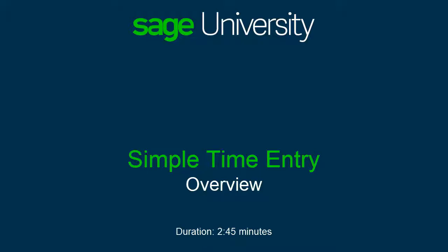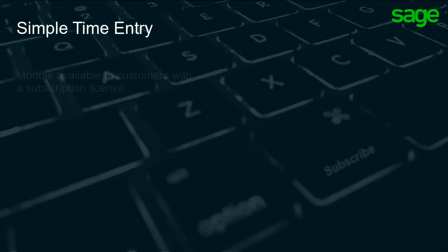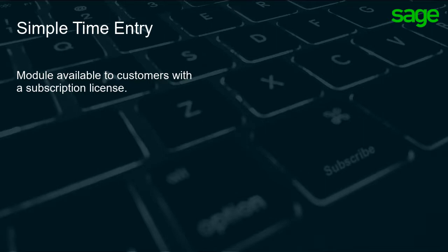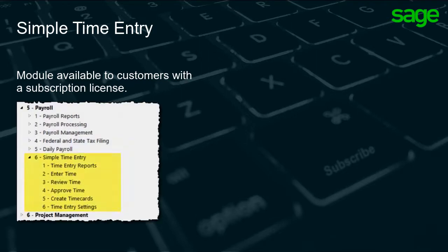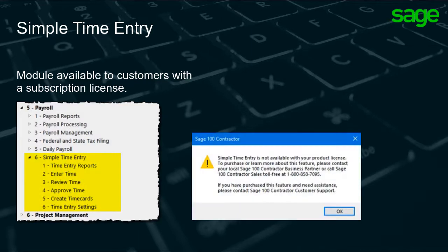Welcome to this learning series for Simple Time Entry. Simple Time Entry is a feature that is only available to Sage 100 Contractor customers with a subscription license. If you are not a subscription license customer, the menu option displays but you receive this message when you attempt to open the option.